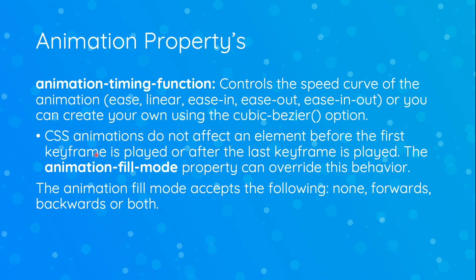The last property we'll talk about is animation-fill-mode. By default, CSS animations do not affect the element before the first keyframe is played or after the last keyframe is played. With animation-fill-mode we can override this behavior. Using 'forwards', the element will retain the style values set by the last keyframe. Using 'backwards', the element gets the style values set by the first keyframe. And using 'both', the animation follows the rules for both forwards and backwards.